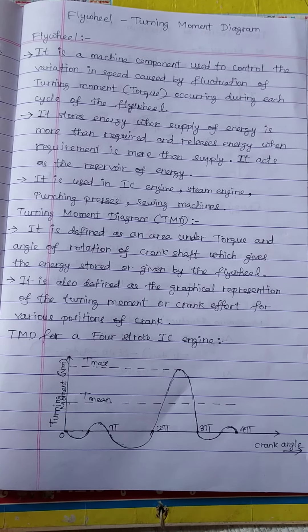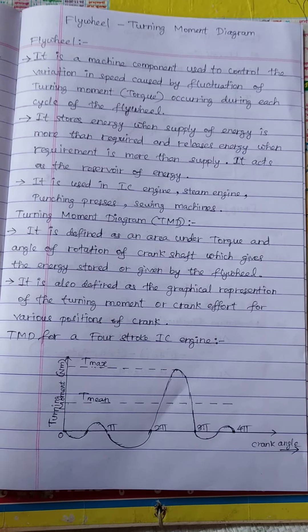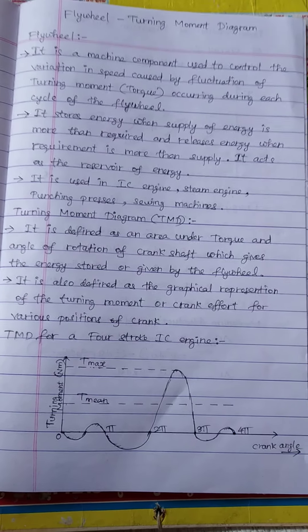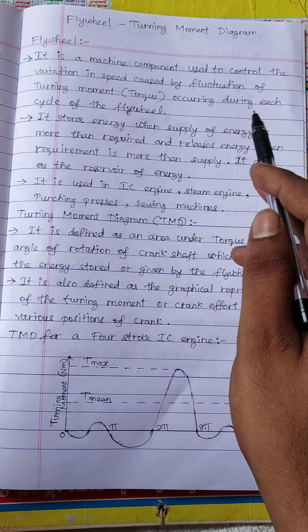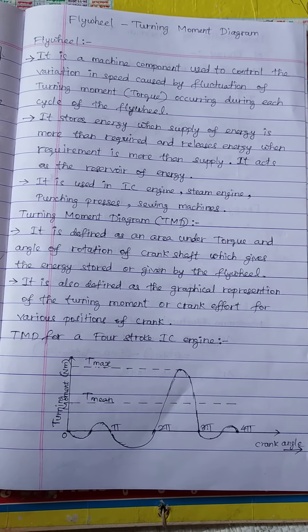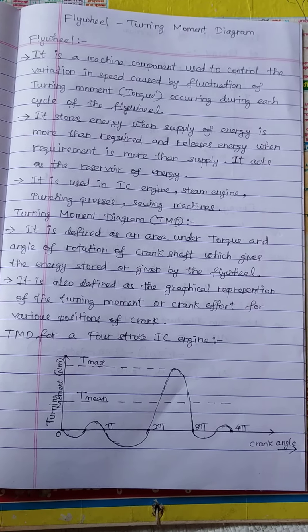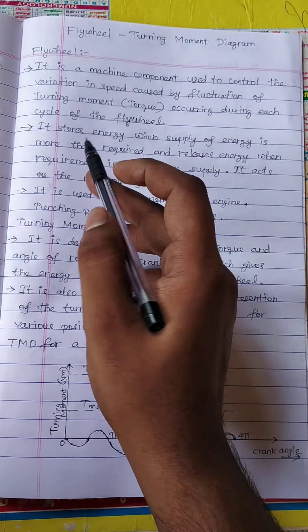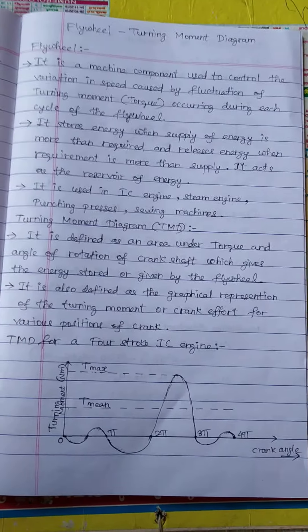Only one power stroke is there, but for every cycle we have continuous constant power supply because of the flywheel. Flywheel is a machine component used to control the variation in speed caused by the fluctuation of turning moment occurring during each cycle. The reason we have variation in speed is because of fluctuation in torque.